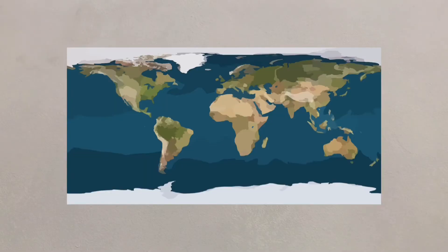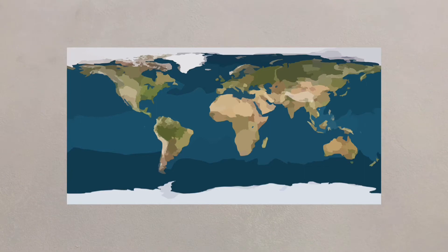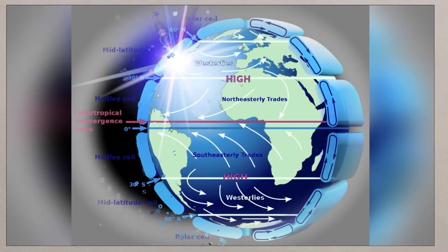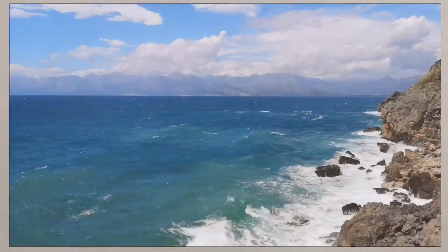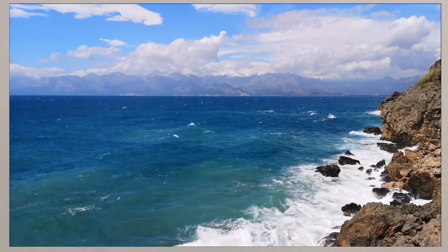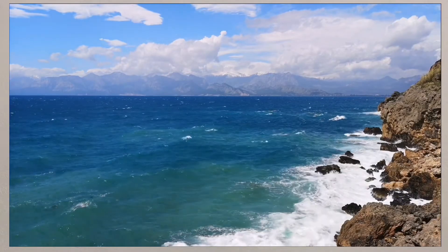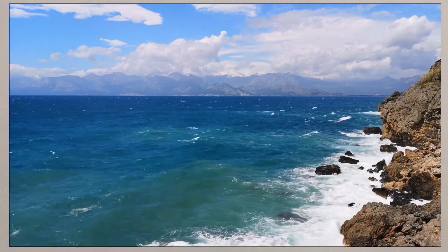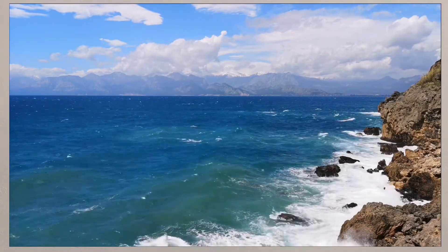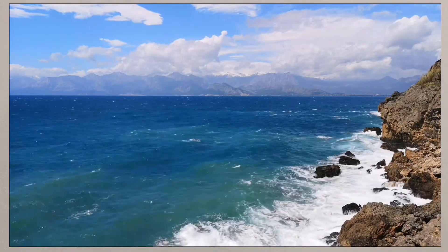Generally speaking, most ecosystems follow an east-west path roughly parallel to lines of latitude. This is due to atmospheric circulation creating different climate patterns further north and south of the equator. Ocean currents, the distribution of land and sea, along with wind can lead to variations from a strict latitude-based pattern.